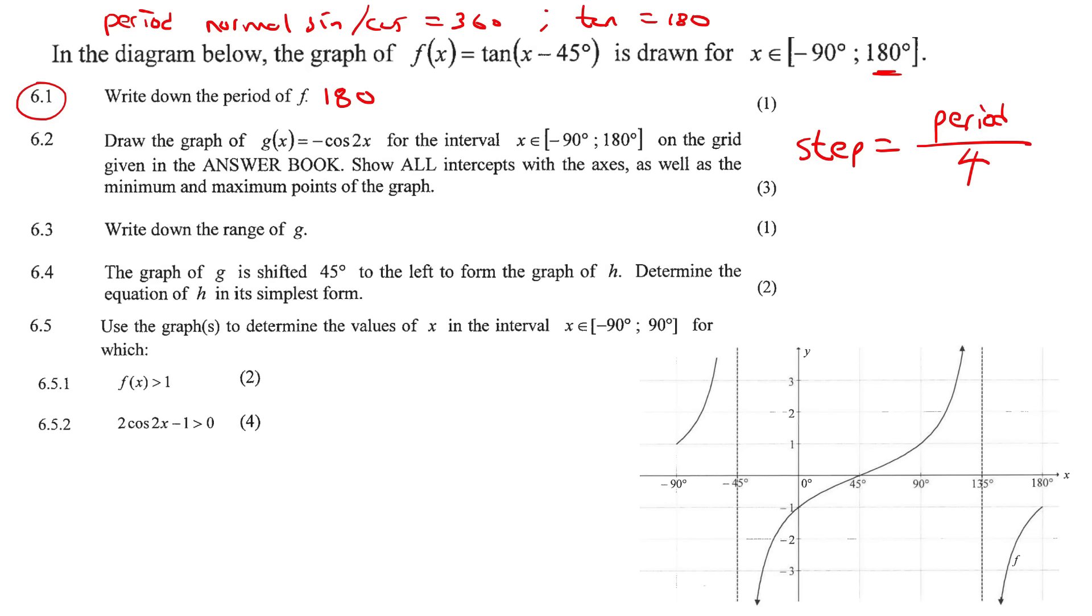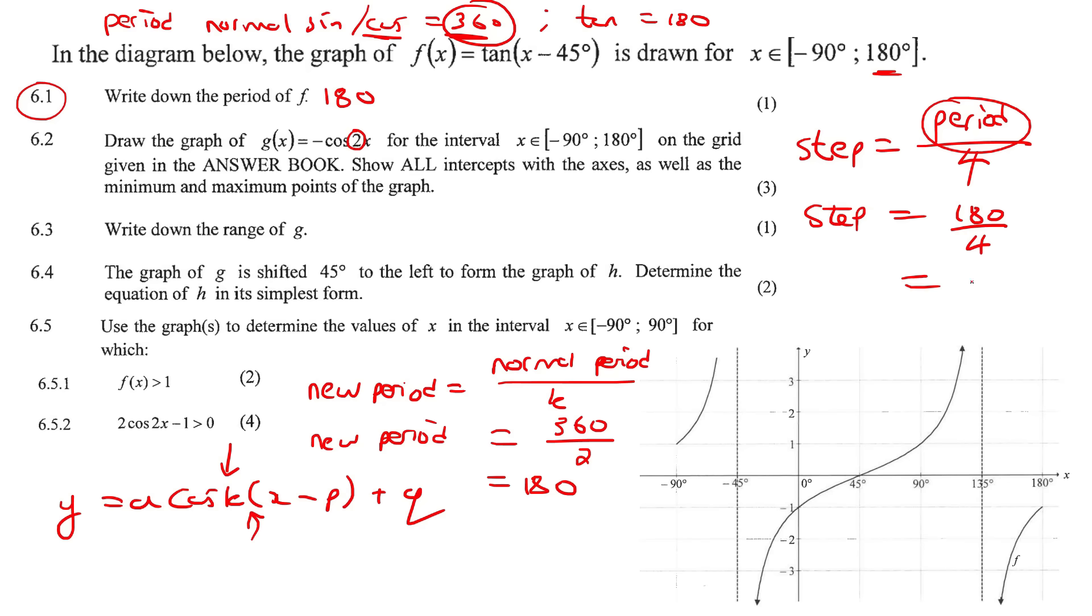The ending position is where they've asked us to end, which is 180. Now the step is the most important part. The step is the period divided by 4. They've given us cos 2x. The k value affects the period. In front of the x, they have the number 2. So the new period is the normal period divided by k. So the new period of this cos graph is 360 divided by 2, which is 180. So the step is ending up as 45.